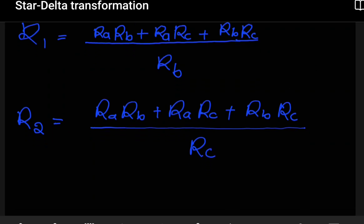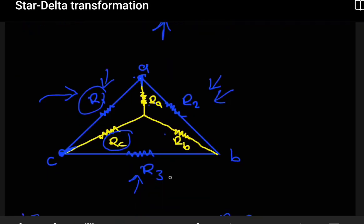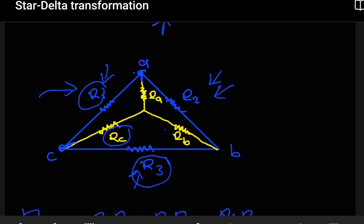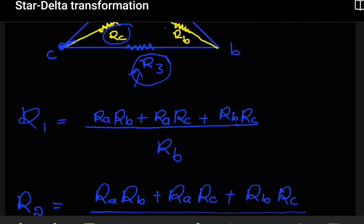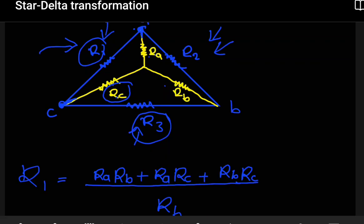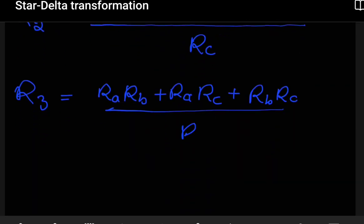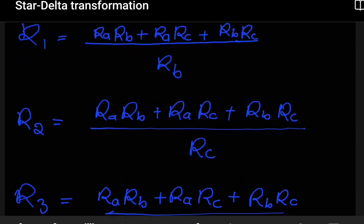The next thing now is to find R-3. To find R-3, we first go back to the diagram. R-3 is here, directly related to R-C and R-B, so we'll be dividing by R-A. The numerator is still the same: R-A multiplying R-B plus R-A multiplying R-C plus R-B multiplying R-C. Then divided by R-A, since we're finding R-3 here related to R-B and R-C directly, and R-A is way at the far end there. This is how we find the resistors R-1, R-2, and R-3.